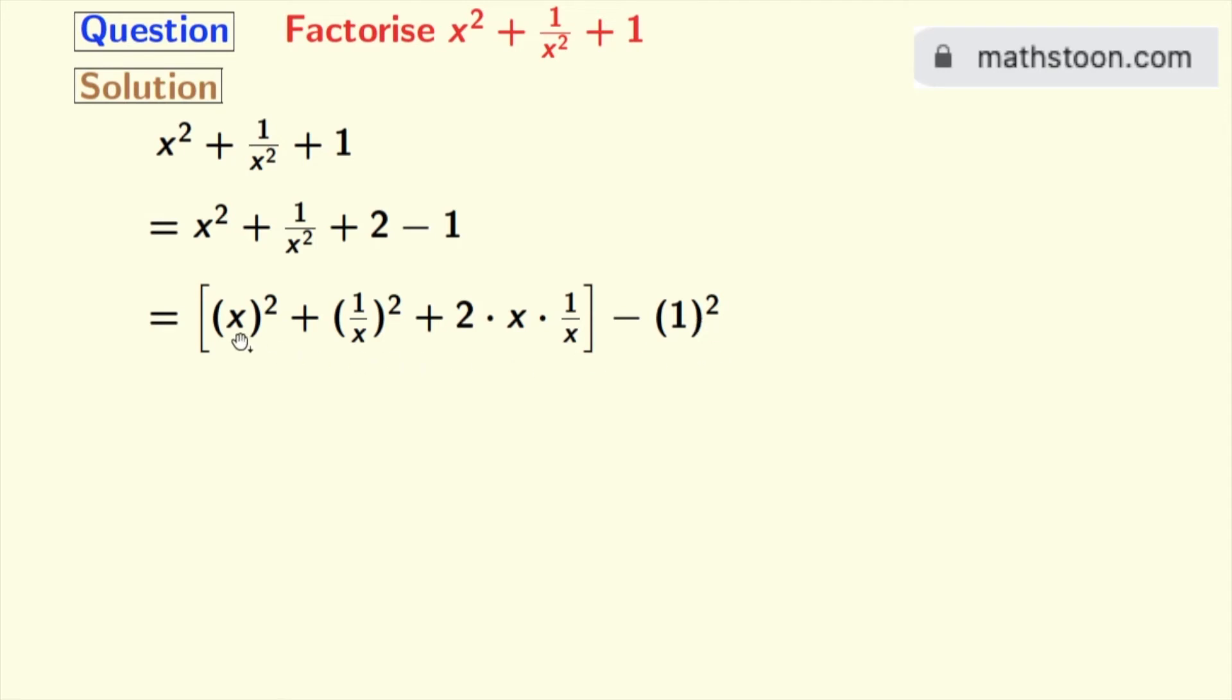Now look that in the square bracket, the expression is in the form of a square plus b square plus 2ab, where a is x plus 1 by x and b is 1 by x.